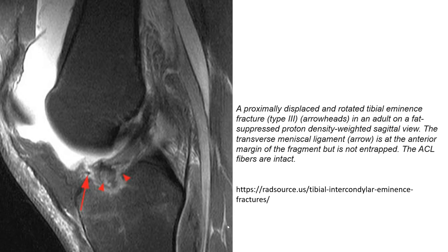This is another example of a proximally displaced and rotated tibial eminence fracture, Meyers Type 3. The arrowhead indicates the fracture in an adult on a fat-suppressed proton density-weighted sagittal image. The transverse meniscal ligament arrow is at the anterior margin of the fragment but is not entrapped. The ACL fibers are intact.